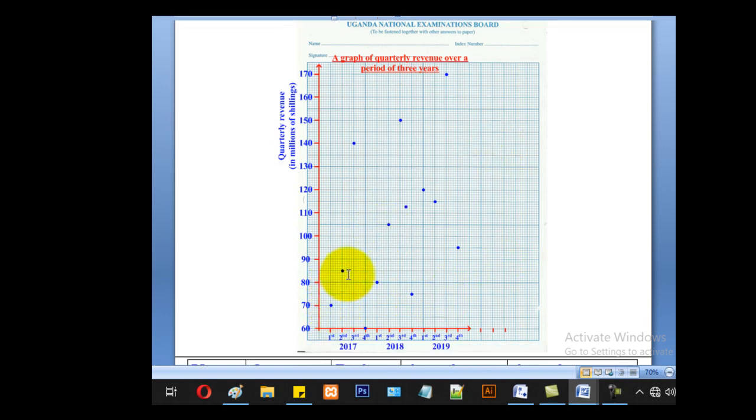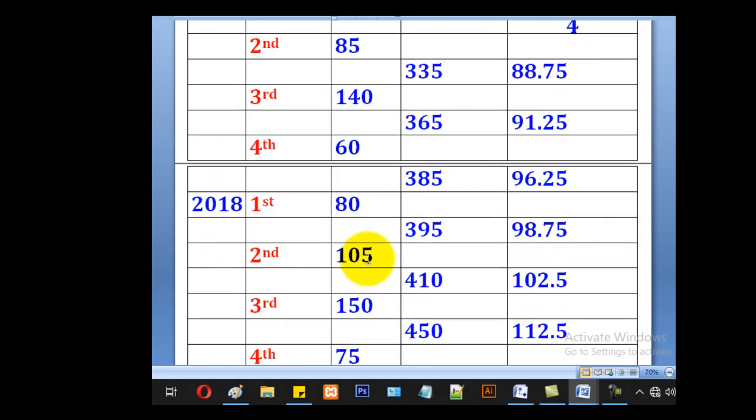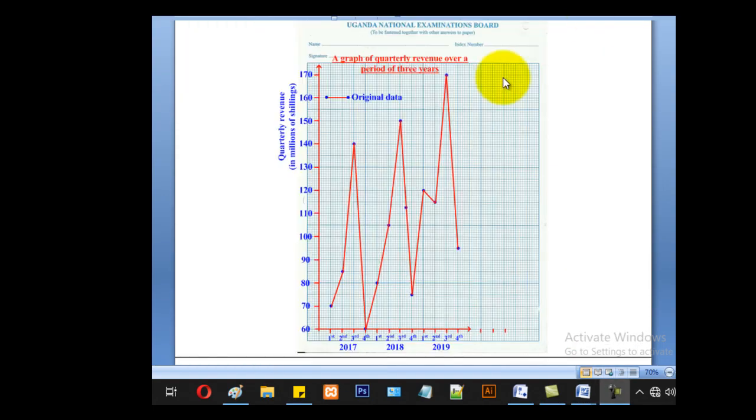Do the same for all the values and you'll come up with points in this way. Remember, these points are joined using a ruler. When you join using a ruler, you'll come up with a graph in this shape. Because we are drawing more than one graph, you have to put the key. This denotes original data.